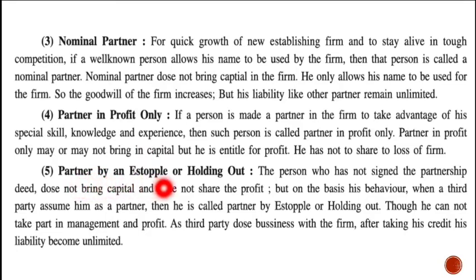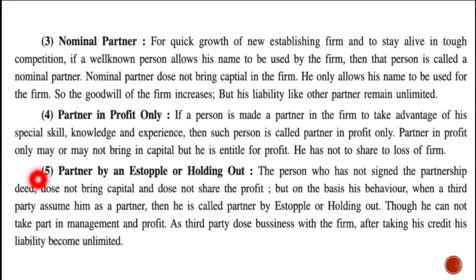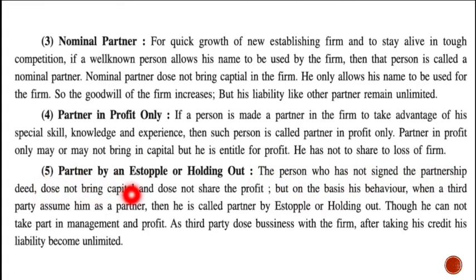The fifth type is partner by estoppel or holding out. A partner by estoppel is one who has not signed the partnership deed, does not bring capital, and does not share in profit or loss. However, based on his behaviour, when a third party assumes him to be a partner, he is called a partner by estoppel or holding out.